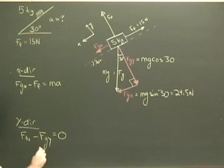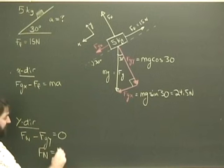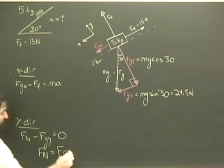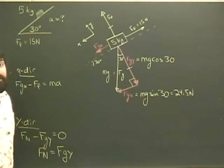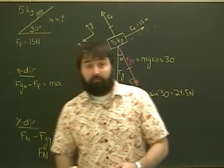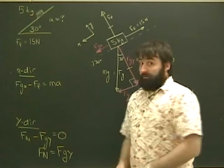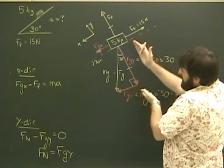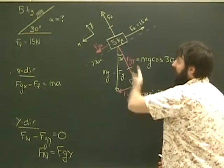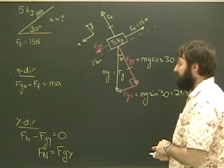And if I take a look at my y-direction here, I can see that Fn is therefore equal to Fgy. So I can show that on my free-body diagram. So the normal force is not equal to the force of gravity, which I've said so many times before. In this case, on a ramp, it's equal to the perpendicular component, or Fgy. The perpendicular component of the force of gravity.